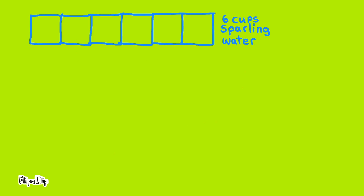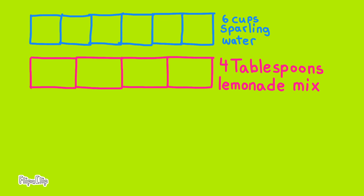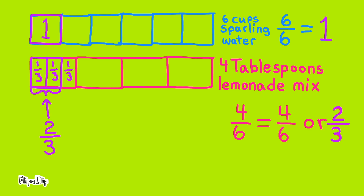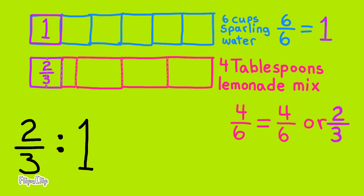This diagram represents 6 cups of sparkling water and 4 tablespoons of lemonade mix. 6 divided by 6 equals 1 cup of water, and 4 divided by 6 equals 4/6, or 2/3 tablespoons of lemonade mix. The ratio is 2/3 tablespoon of lemonade mix to 1 cup of sparkling water.